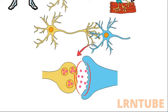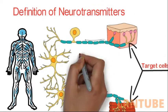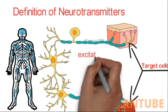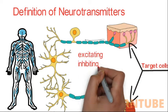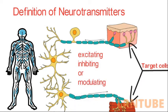Here, electric signals that have traveled along the axon are briefly converted into chemical ones through the release of neurotransmitters, causing a specific response in the receiving neuron. A neurotransmitter influences a neuron in one of three ways: either by exciting, inhibiting, or modulating.